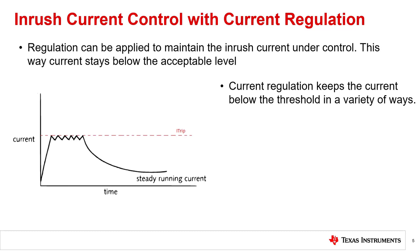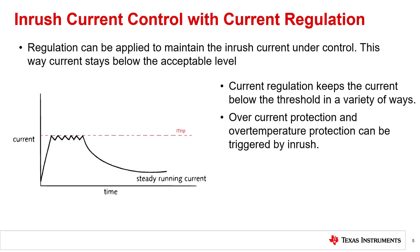The way in which this happens depends on the specific method of current regulation used. Consult the datasheet of your driver to find out more about the different ways current regulation can work. However, if current rises even faster than ITRIP can keep it under control, then TI drivers feature an over-current protection that will protect the driver and the motor by disabling the H-bridge. Additionally, if a high current is sustained for long enough such that the device reaches dangerous temperature, over-thermal protection will activate and disable the driver. Each driver has different levels of OCP and OTP, so please consult your datasheet to see how they will affect your specific driver.